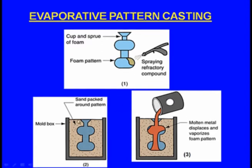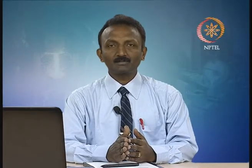After packing the sand around this pattern, we melt the metal and pour the molten metal into this pattern. The most surprising thing is the pattern is not removed. The pattern — the model of the component which we are going to manufacture — is still present and we are pouring the molten metal inside. Because of the evaporative nature of the pattern, the pattern keeps on evaporating, making a space — a hollow cavity inside the mold — which the molten metal occupies.